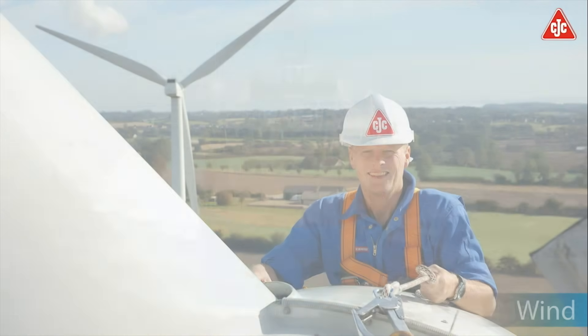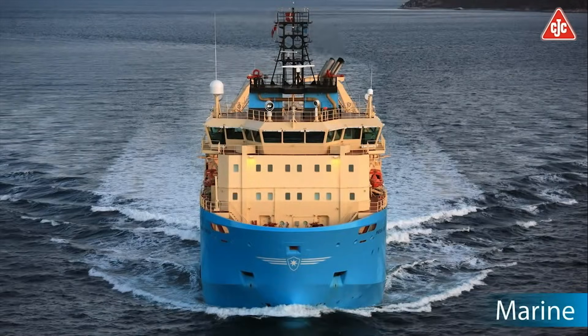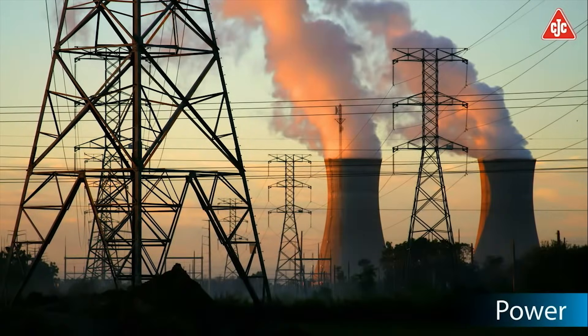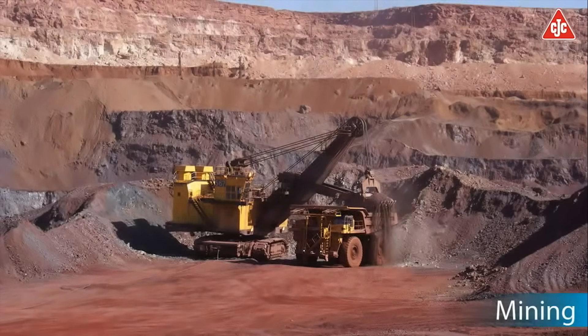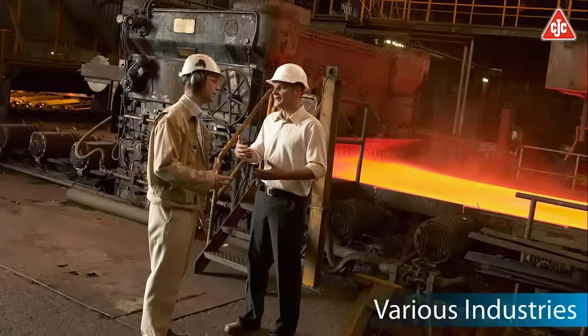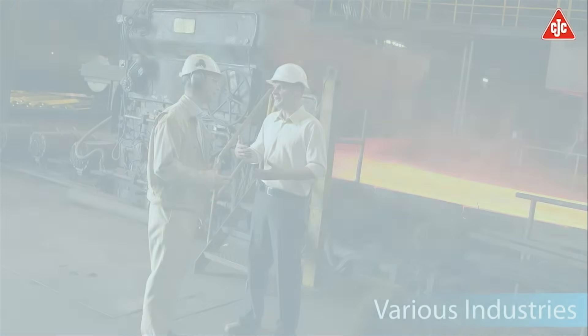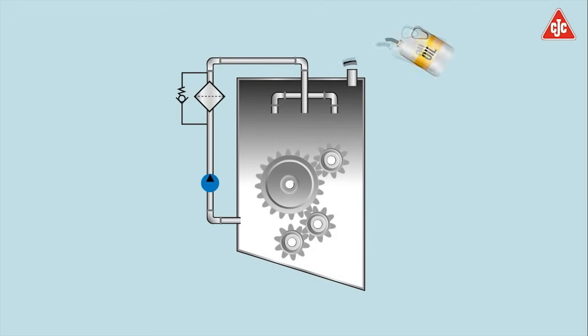C.C. Jensen is the global leader in oil treatment. For 60 years we have removed oil contaminants from thousands of oil systems within the wind, marine, power, mining and industrial segments. This movie illustrates the efficiency of installing a CJC oil maintenance system.